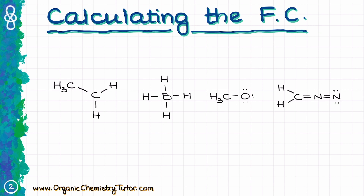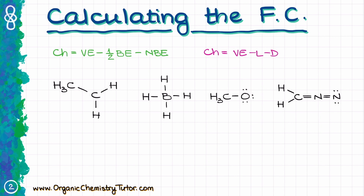How do we calculate the charge if an atom doesn't have a charge shown, or maybe we're unsure, or the charge is just not given? There are two ways. The official way says: charge equals the number of valence electrons minus one-half of bonding electrons minus non-bonding electrons. The quick way I prefer is: charge equals valence electrons minus lines minus dots.